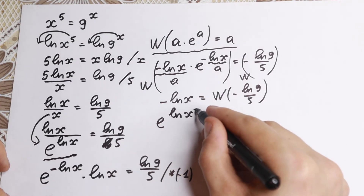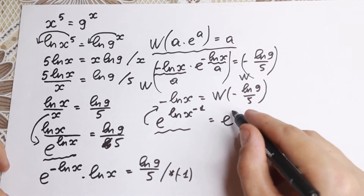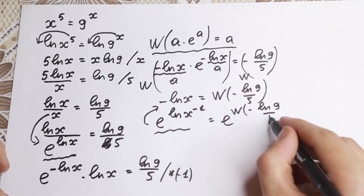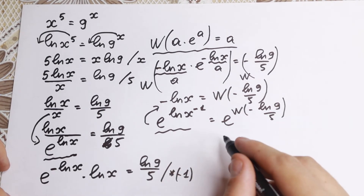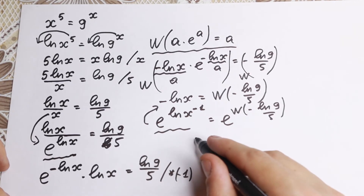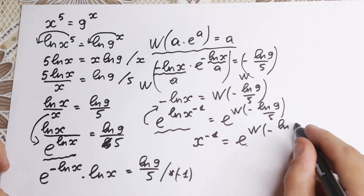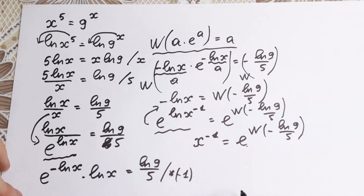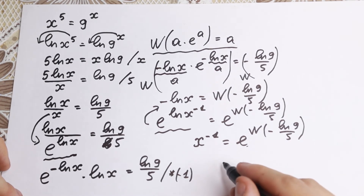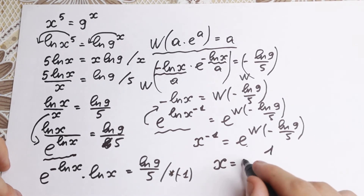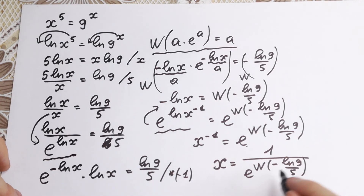How can we find x? Let's write it as e to the power of natural log x to the power minus 1. Writing e on both sides, we get e to the power of natural log x to the minus 1 equal to e to the power of W of minus natural log 9 over 5. The e and natural log cancel, giving us x to the power minus 1 equal to e to the power of W of minus natural log 9 over 5. Bringing the minus 1 power to the denominator, our final answer is: x equals 1 over e to the power of W of minus natural log 9 over 5.